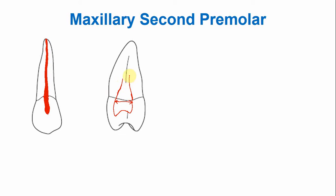In the apical third of the root canal, there is an abrupt constriction, and usually the canal opens at the apex of the tooth. But sometimes there is a slight lingual or buccal opening as well. So this is the most common configuration of the maxillary second premolar — single canal and two pulp horns.